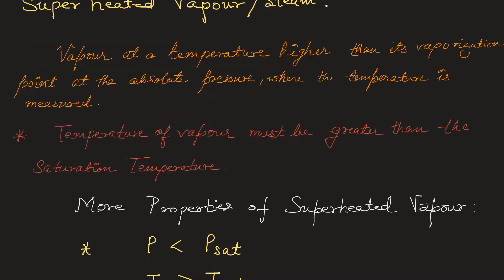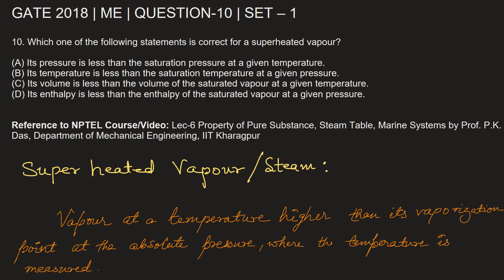Now let's go back to the problem and check with the options. We can see here option A: its pressure is less than the saturation pressure at a given temperature. So option A is the correct choice.